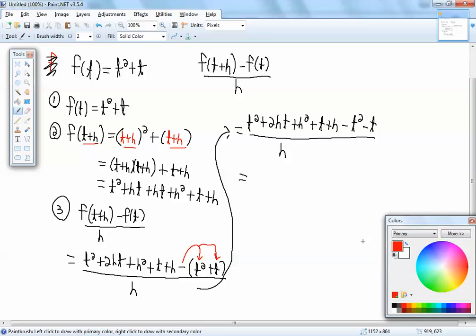Now, combine like terms. T squared minus T squared, going to cancel. What else is going to cancel? T minus T will cancel. So then we're left with 2HT plus H squared plus H over H.